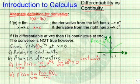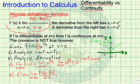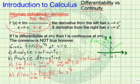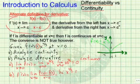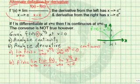However, let's continue by analyzing the derivative f prime of zero, using our alternative definition. We take the limit of f of x minus f of zero, over x minus zero, as x approaches zero. So we evaluate the limit of x to the two-thirds minus zero — since f of zero equals zero — divided by x minus zero, as x approaches zero.